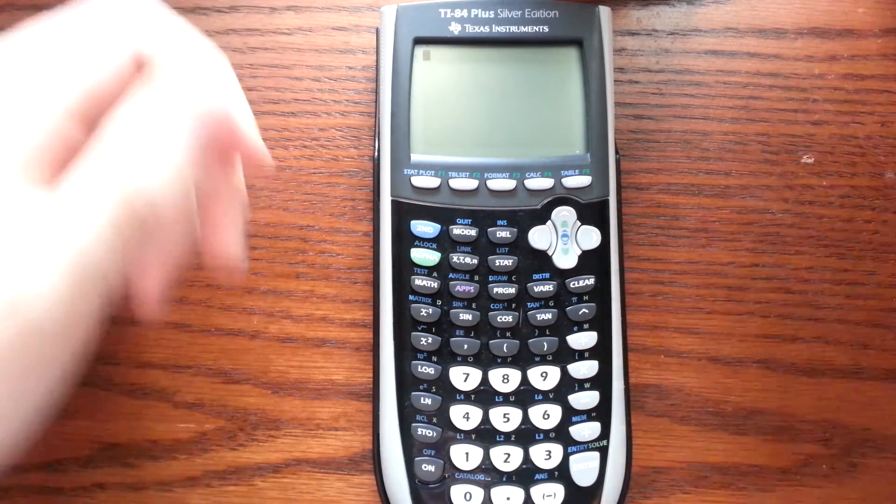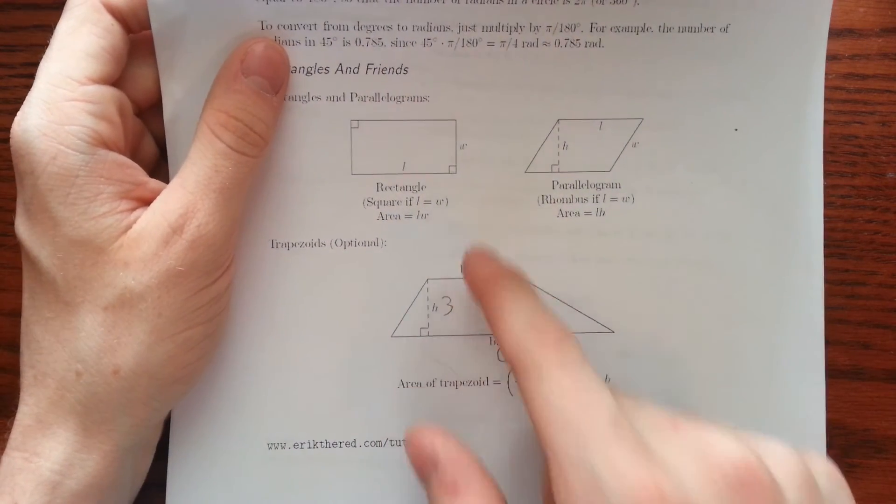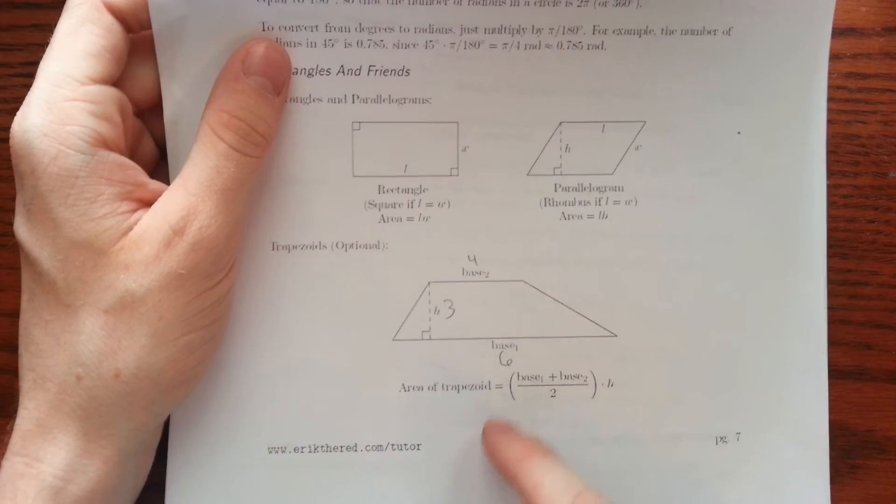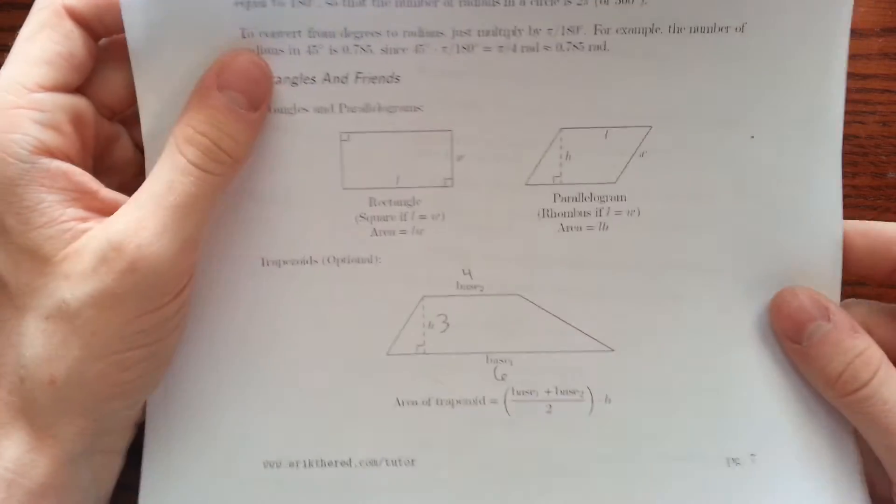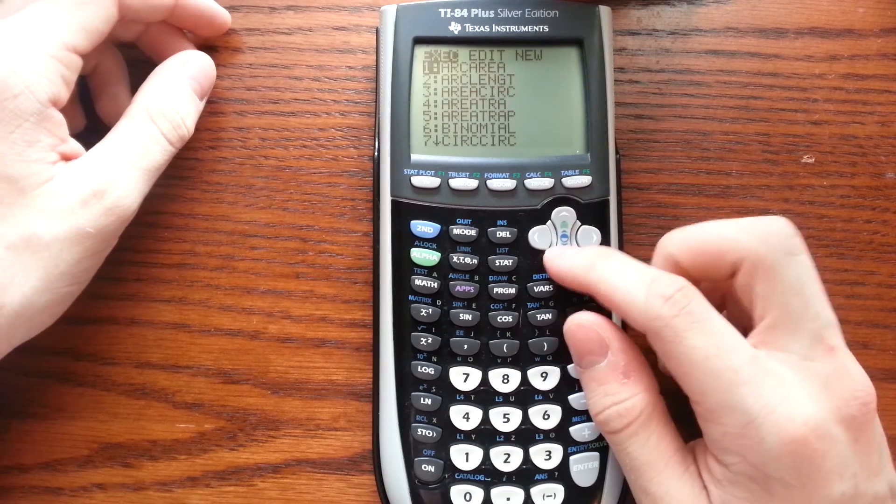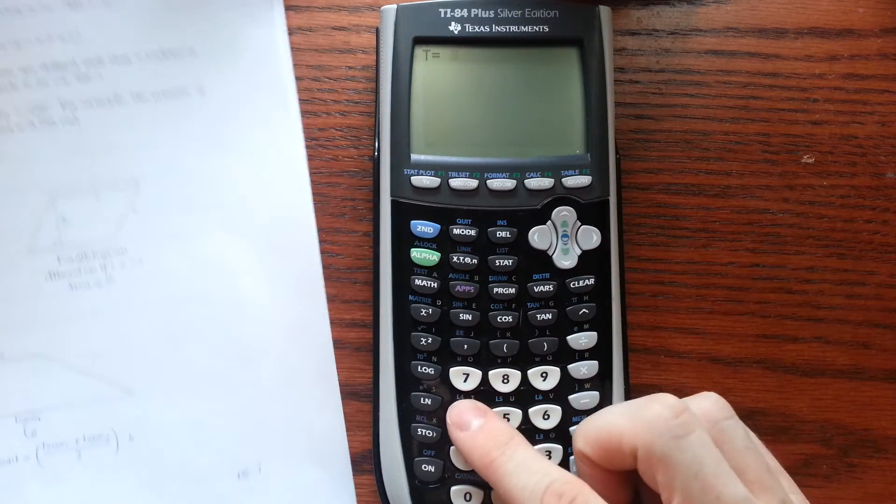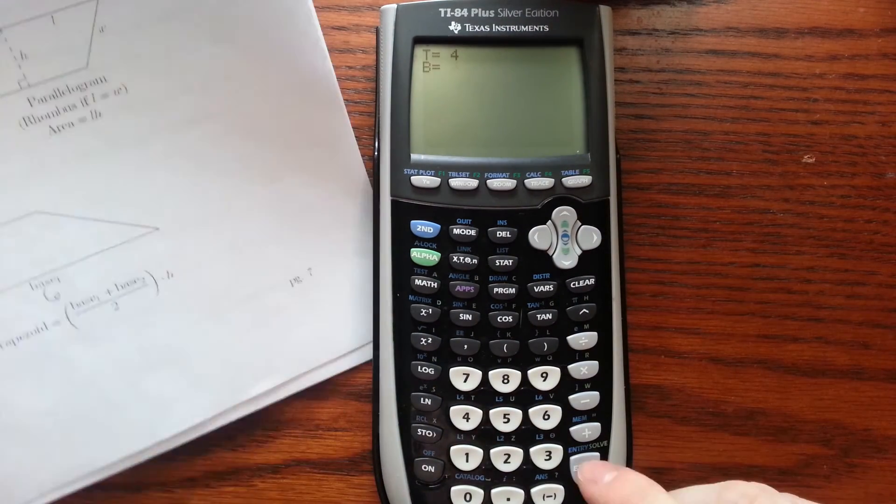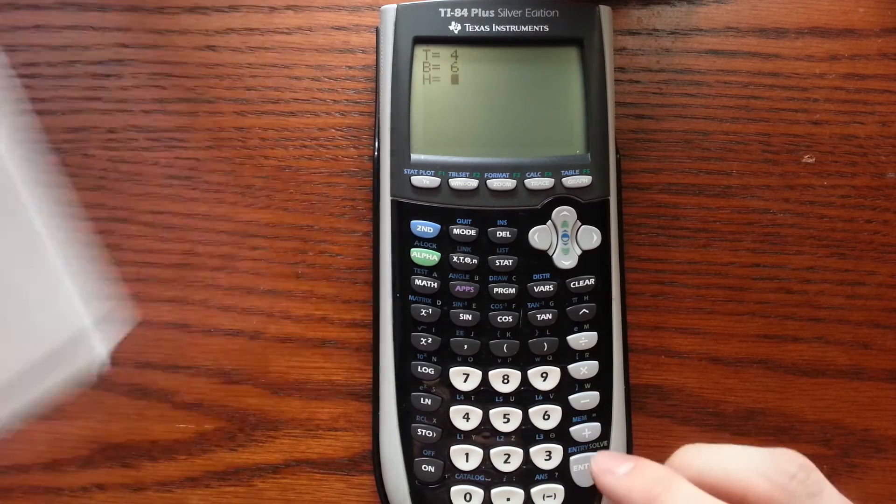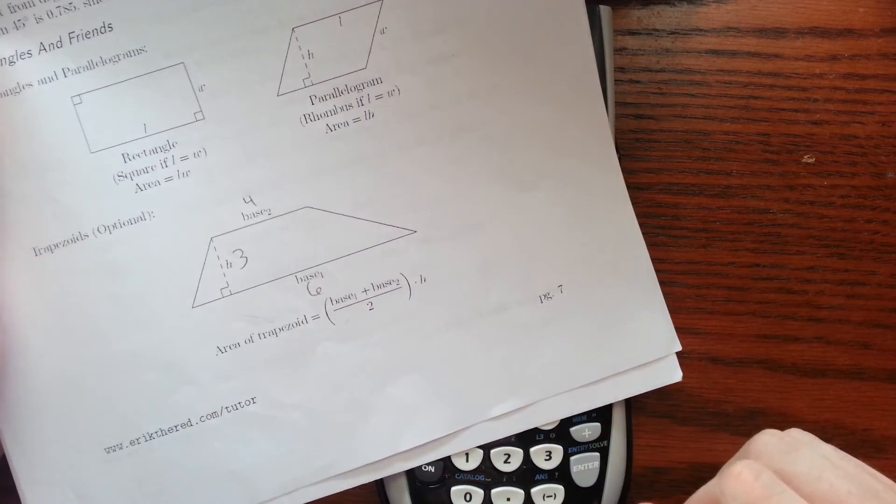Now to do an example of how this works, over here you see I have a Base 2 of 4, or Top, and Base 1 of 6, or Bottom, Height 3. So we can go to Program, Area Trap, Enter. Top is 4, Bottom is 6, and Height is 3, and Area is 15.